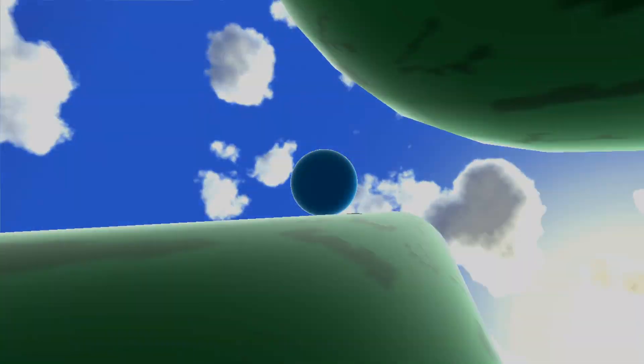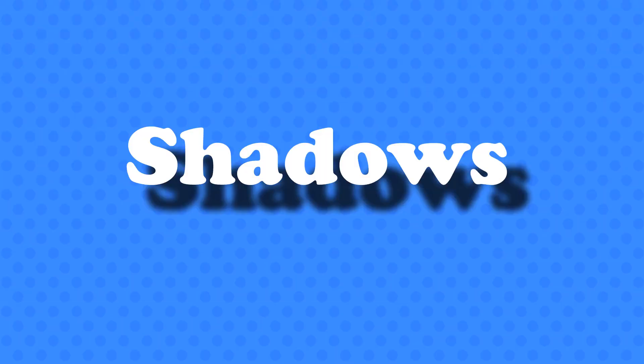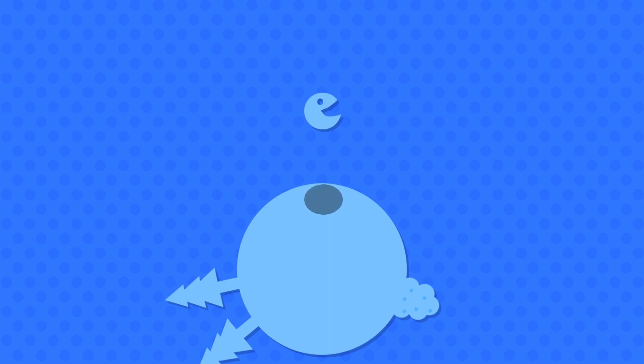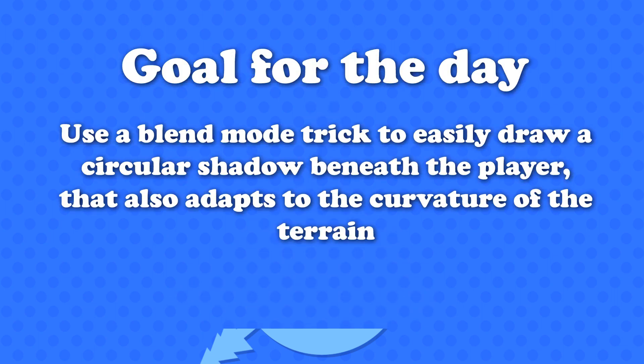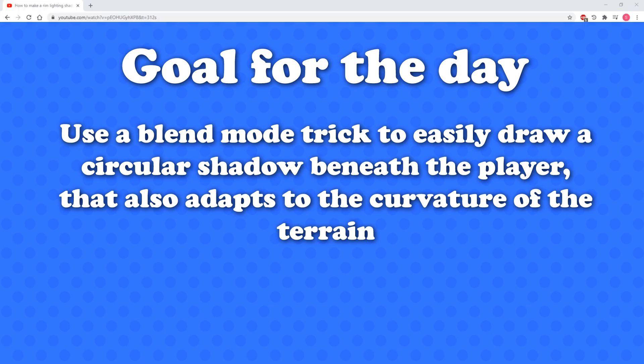And that brings me to the topic for today's video: shadows. There are many ways to do shadows in 3D games, ranging from baked light maps to real-time shadow maps, stencil buffers, and ray tracing. I'm a fan of the good old circle beneath the player. However, what many people do is create a circular sprite and draw that beneath the player. This can work okay when the ground is perfectly flat, but fails as soon as the ground is curved. So in today's video I will show you a really clever trick using blend modes for drawing a circular shadow that adapts to the ground beneath the player.